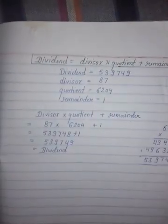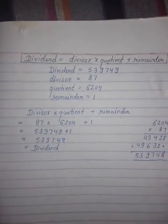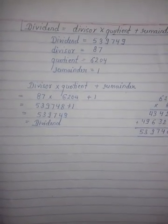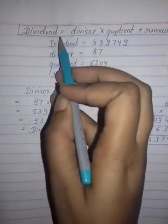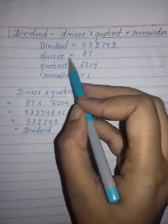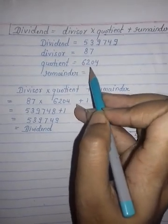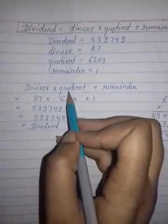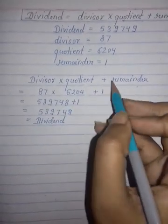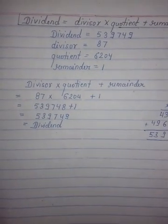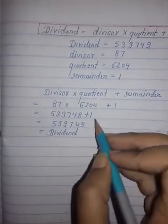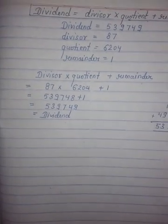Now we can check if our division is right or not. For checking the division, we use this formula: dividend equals divisor times quotient plus remainder. Here the value of divisor is 87, quotient is 6204, remainder is 1. So multiply divisor and quotient, you will get 539,748. Then add the remainder in this, and then you will get the dividend. If you get the dividend, it means your answer is right. So that's all for today, thank you.